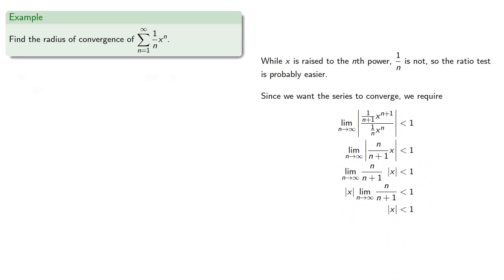And so applying our favorite convergence test, we find that convergence requires the absolute value of x be strictly less than 1. And so the radius of convergence is r equal to 1.